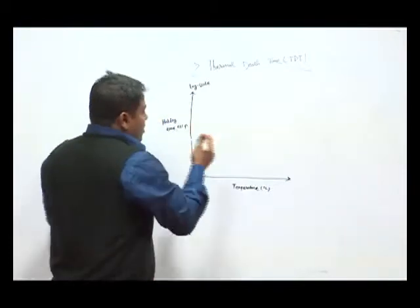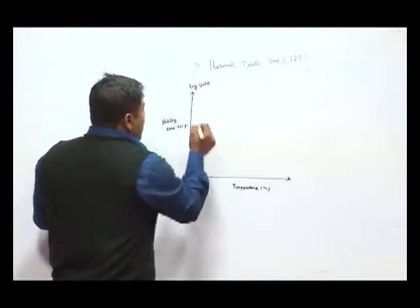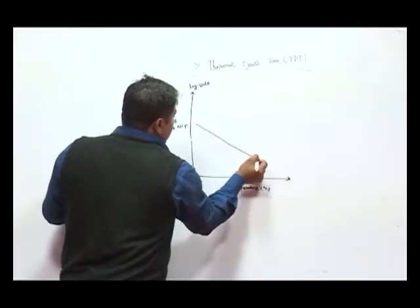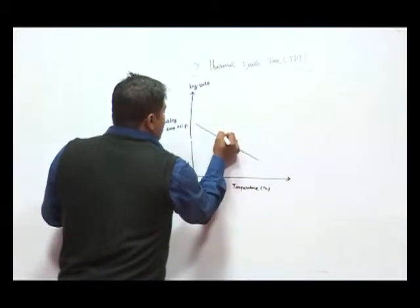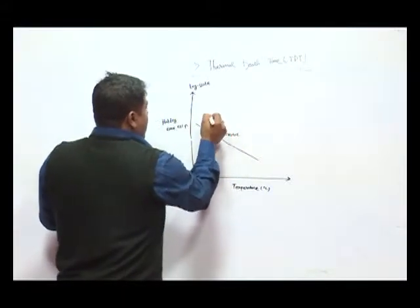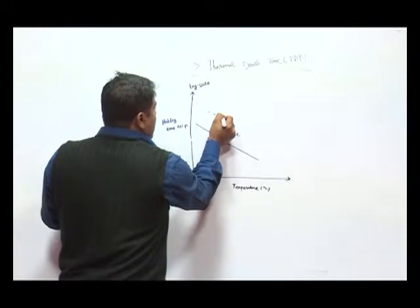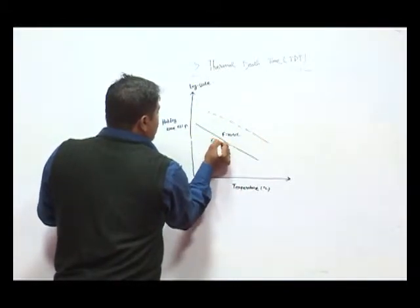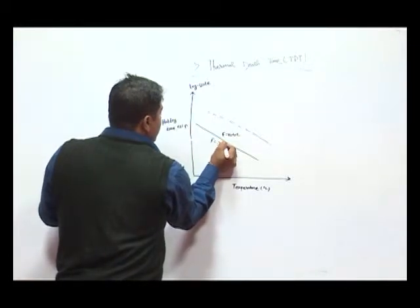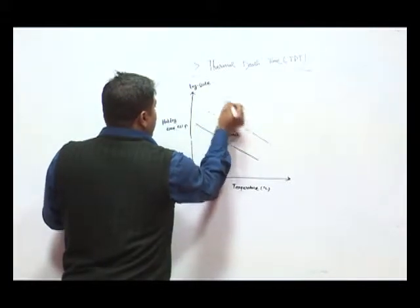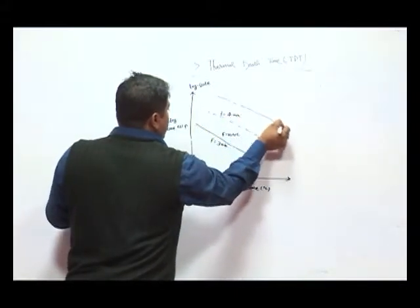If we plot the corresponding F value and C value, we can find that, say this is the F value, and this is the parallel F value. Say this is F equal to 3 minute, this is F equal to 4 minute, F equal to 5 minute.